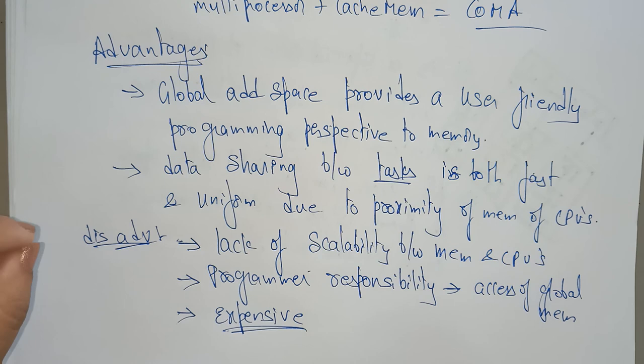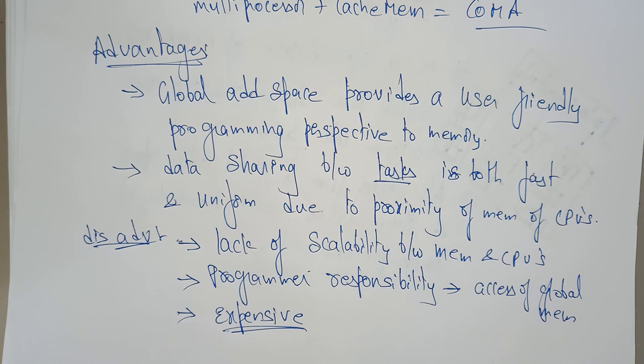So this is about Cache Only Memory Access. So far we have seen the multiprocessor architecture models. In the next video, I am going to explain about the multi-computer architecture model — that is NORMA. Thank you.